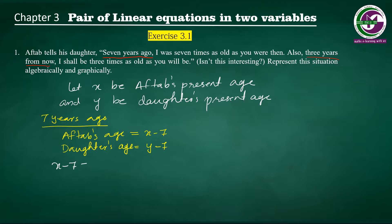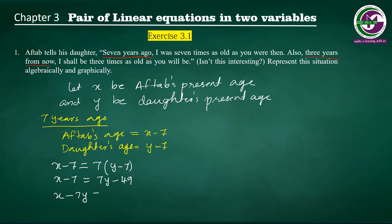There is a relation given: 'I was 7 times as old,' meaning Aftab's age equals 7 times the daughter's age at that time. So: x minus 7 equals 7 times (y minus 7). Opening the bracket: x minus 7 equals 7y minus 49. Rearranging by subtracting 7y and adding 7 on both sides, we get Equation 1: x minus 7y equals negative 42.